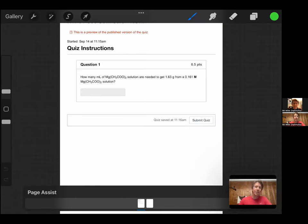For this one, the question says: how many milliliters of magnesium acetate solution are needed to get 1.63 grams from a 0.161 molarity magnesium acetate solution?